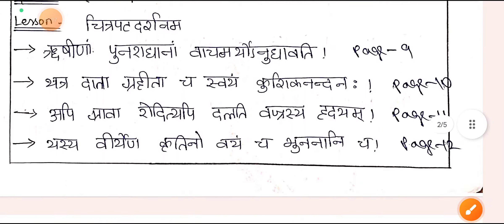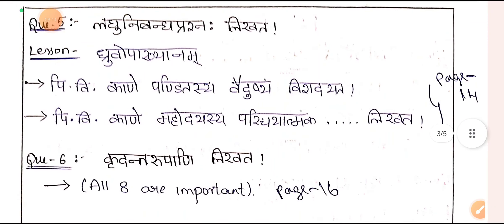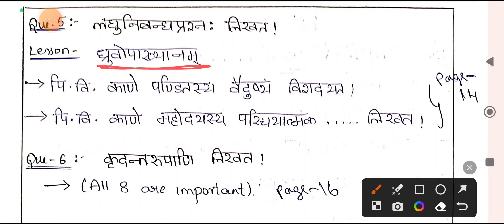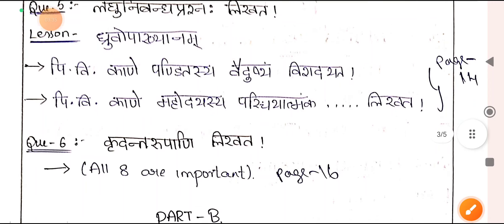Next is Dhruvopakhyanam. In this lesson you are going to write about the Kavi, just like Vivekananda Vijayam. Dhruvopakhyanam will also be given for your Kaviparichaya. Write about the Kavi in brief — no need to write so much. 5-6 lines is enough to get 5 marks.